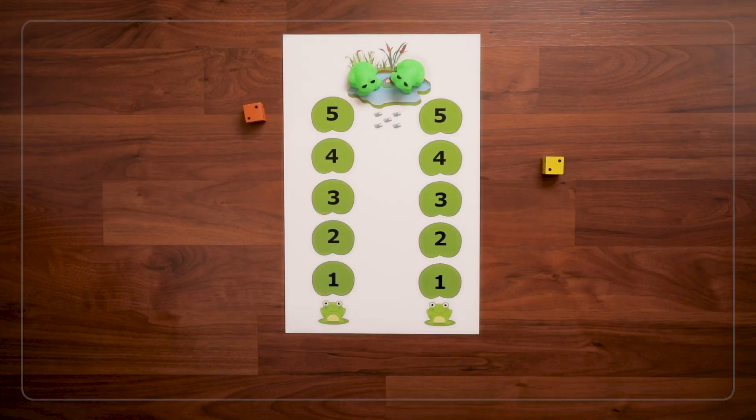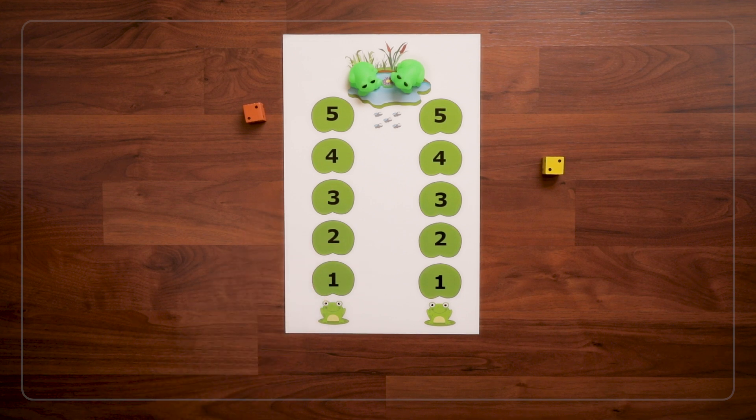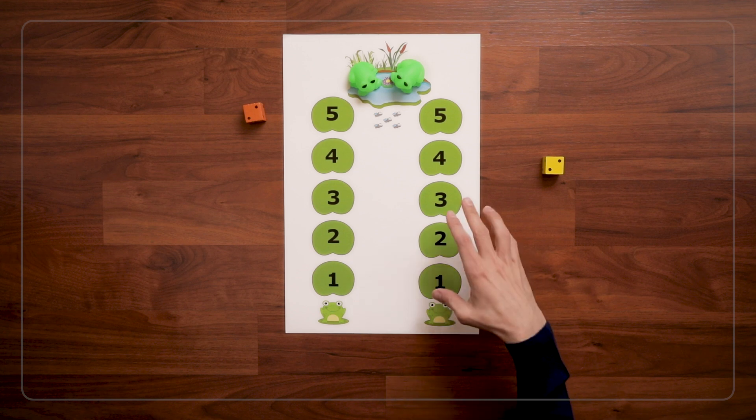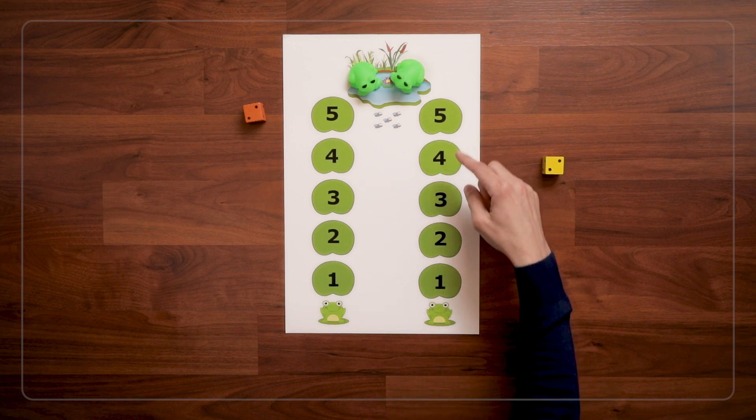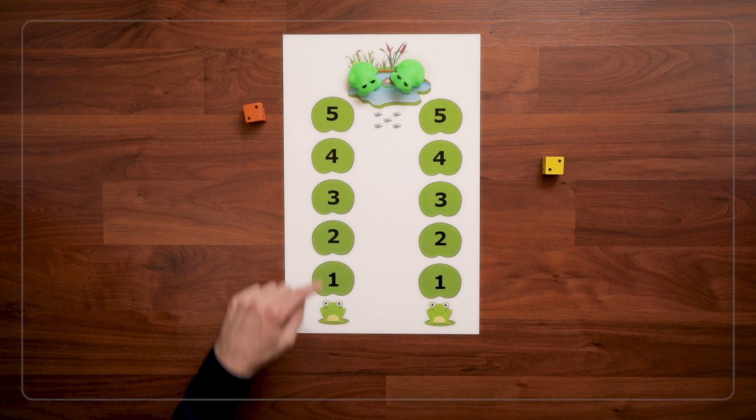Then after the frogs swim around for a bit, you can roll to have them hop back home. And the hopping back is really great too because children are seeing how the numbers go backward in order. And kids need lots and lots of practice with number order both forward and backward on the number path.